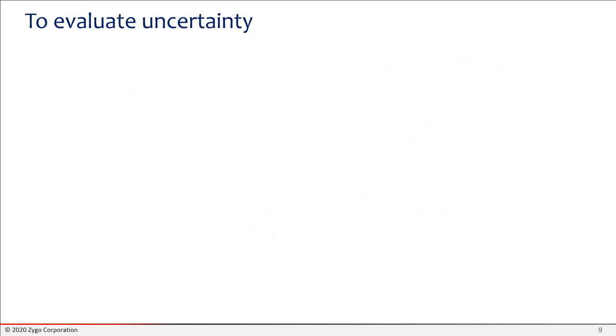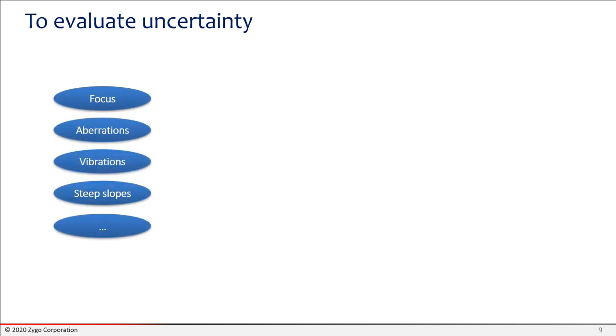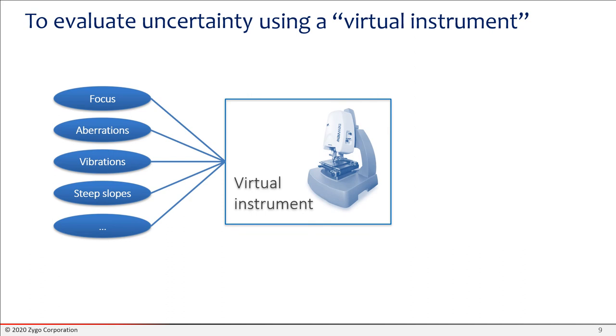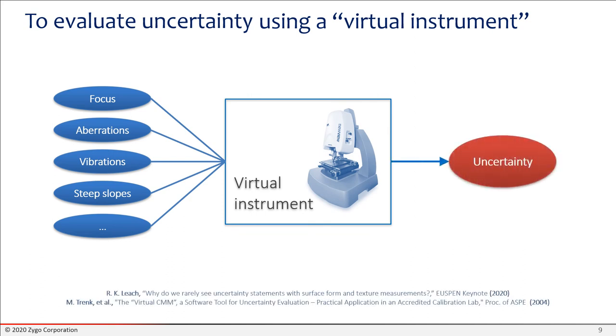Another thing you could do with a good interferometer model is to evaluate uncertainty. Suppose you've identified a series of sources of error, focus aberrations, vibrations, steep slopes, and so forth. You could certainly do some experiments to find out how those things are influencing the uncertainty of your final result. But it would sure be nice if you could just do that numerically in a computer, what's called a virtual instrument, and then you get an uncertainty at the other side. And there are a variety of different approaches that you could apply to this, including machine learning.